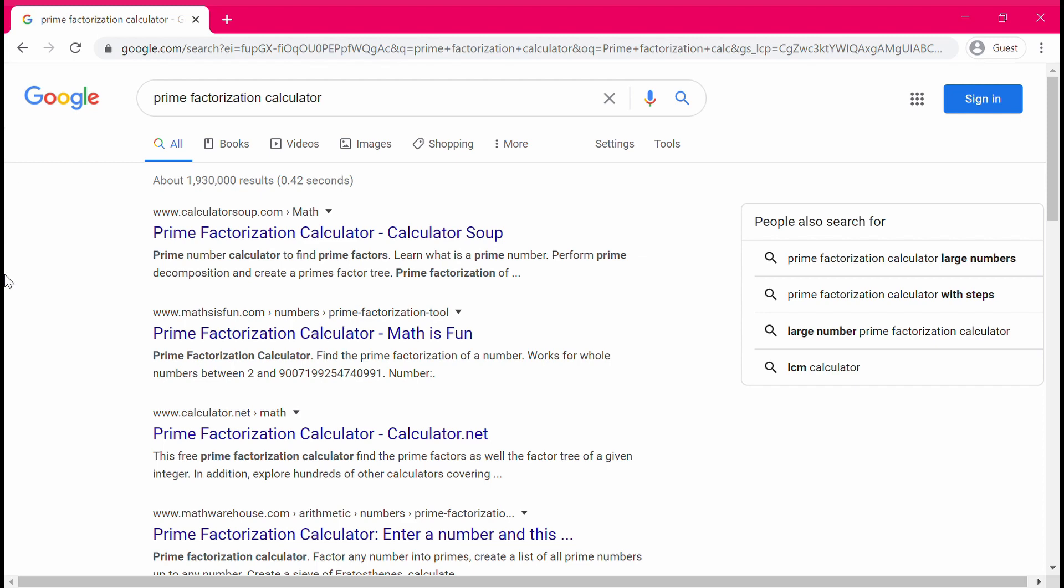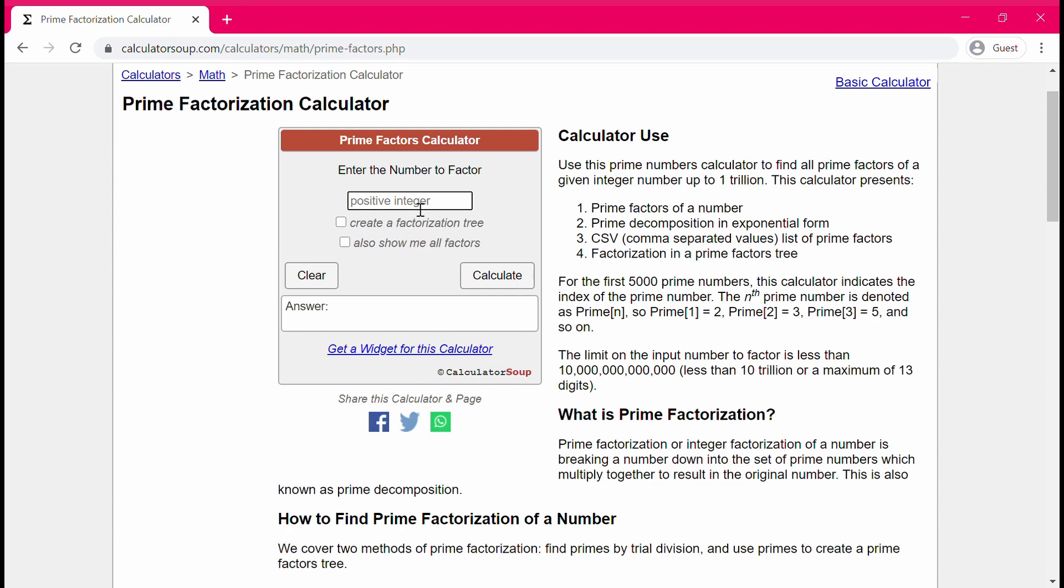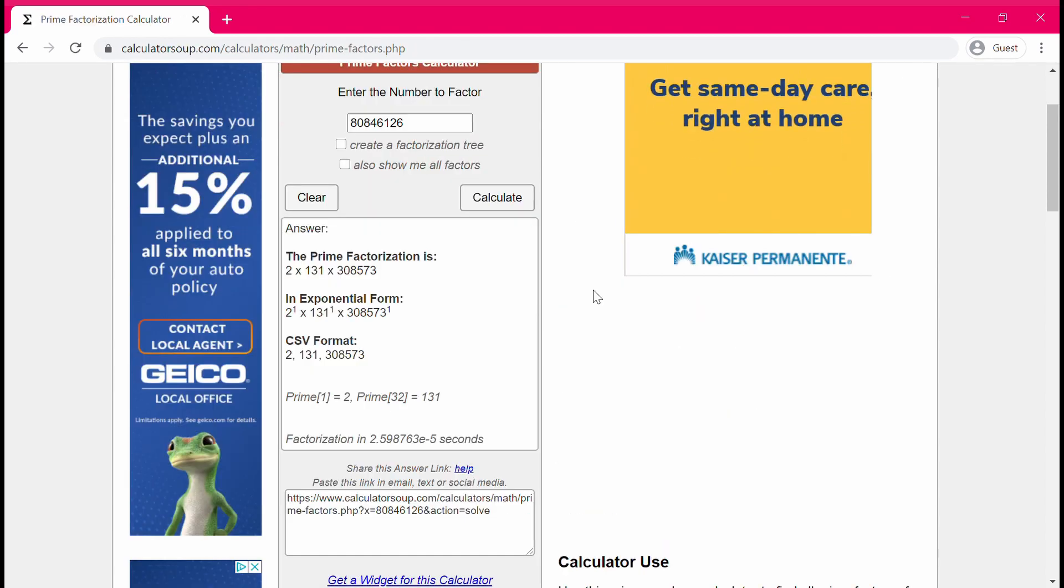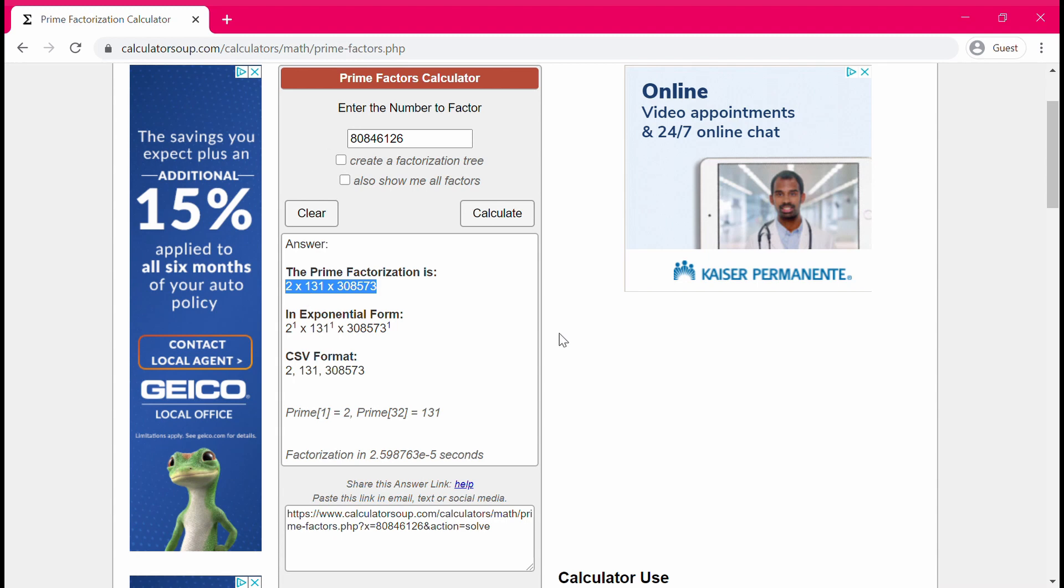First thing to check is its prime factorization. We can find a calculator on the internet to do this. Okay, so we have three distinct prime factors, which is kind of interesting. It's obviously not a power of two.